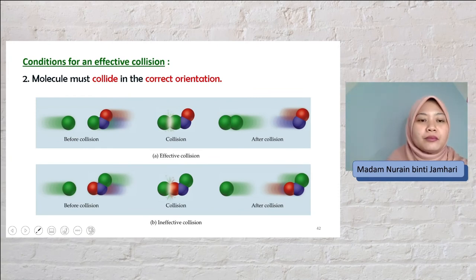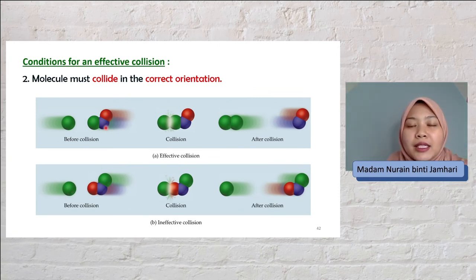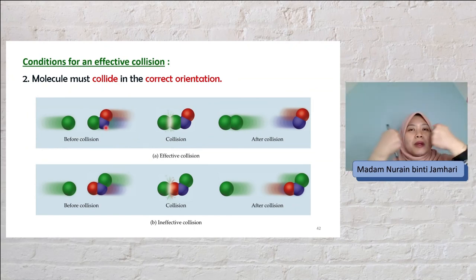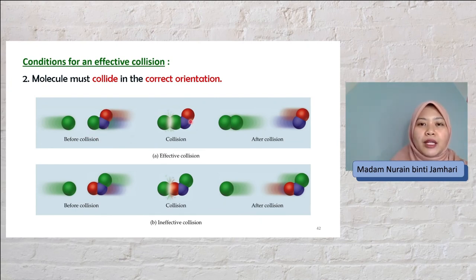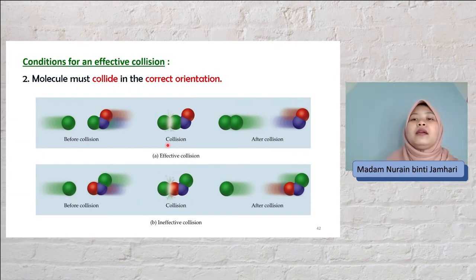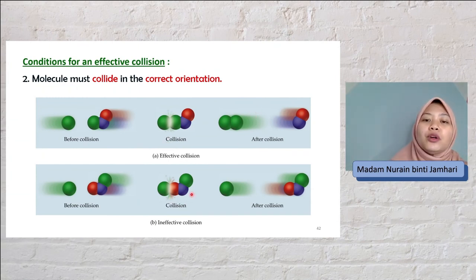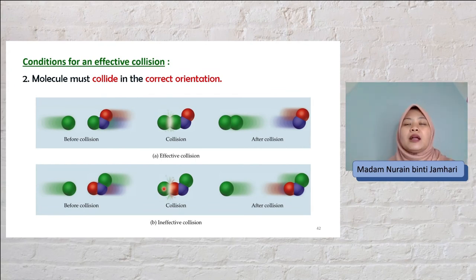As shown in the diagram, no matter how much kinetic energy the molecules have, if the orientation during collision is wrong, the product will still not form. In this example, the molecule must meet the green part — meaning the correct binding site must align properly. If the energy is sufficient but the orientation is wrong, the molecules will just bounce back and no product will be formed. That is what defines effective collision.